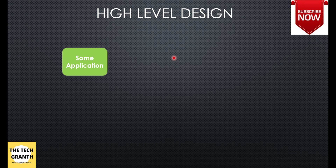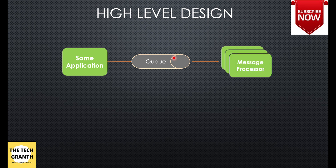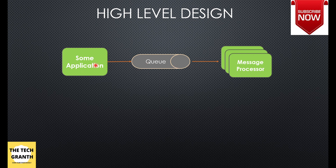The high-level design will have some external application that wants to send a notification. We will have a queue — whatever notification the application wants to send, it puts in the queue. On our side, a message processor picks up that message and processes it. The message processor reads the notification, which can be in JSON or XML format with multiple tags that identify the message type — text or QR code — and the desired sending channel, such as WhatsApp, email, or SMS.